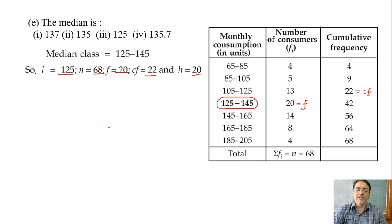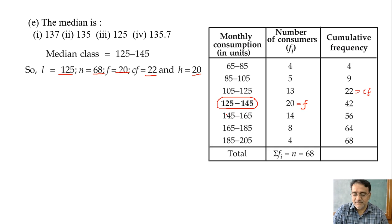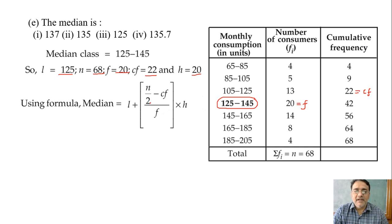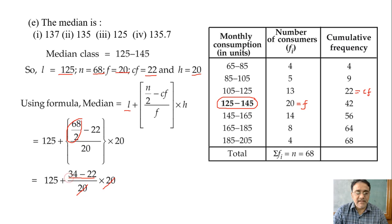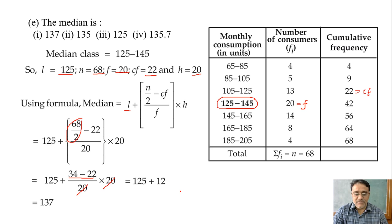The formula of median is: l plus (n/2 minus cf) upon f, into h. Now substituting: l = 125, n/2 = 34, cf = 22, f = 20, h = 20. The 20 and 20 cancel, and we get 12. So 125 plus 12 gives a final answer of 137. The correct option is the first one.